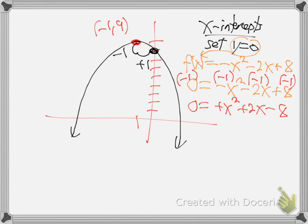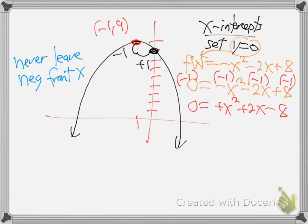So multiply through by negative one all the way through. Negative one times zero is zero. And now this will be positive x squared plus 2x minus 8. Never leave a negative in the front of x squared - multiply by negative one.